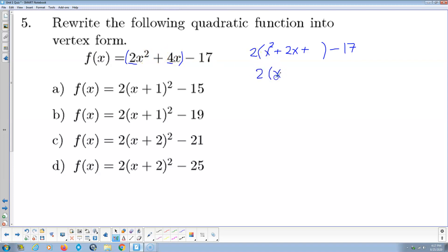Then I go to complete the square. So half of 2 is positive 1, and then 1 squared is going to be positive 1 here. Now, when we put a 1 here, when we add a 1 here, we actually added two 1s because everything in the parentheses is multiplied by 2. So we just added positive 2 to the right side of the equal sign. So that means on the same side, I add the opposite, negative 2. We group those together. There's our answer in vertex form. So f(x) is equal to 2 times the quantity x plus 1 squared minus 19. Answer B.